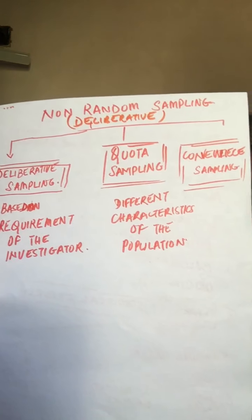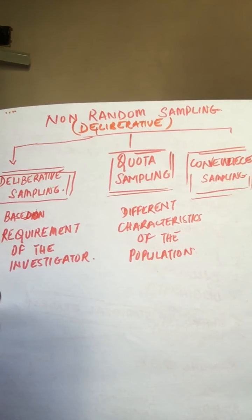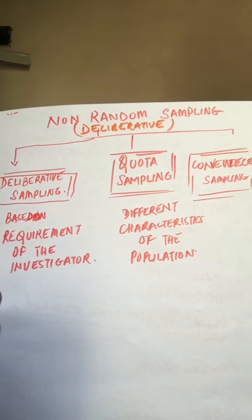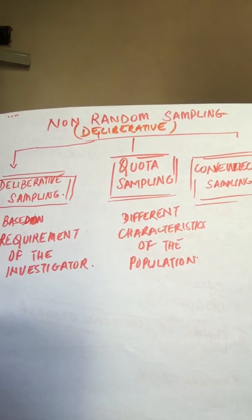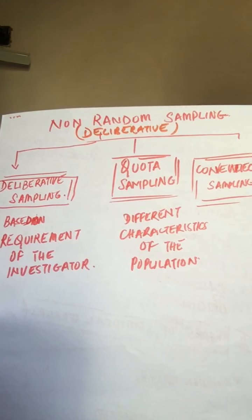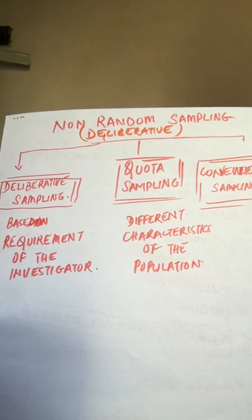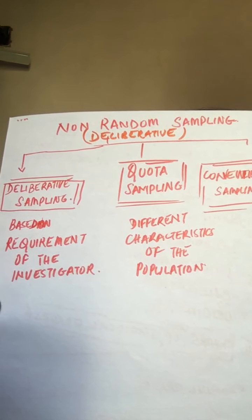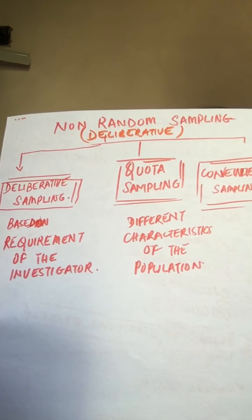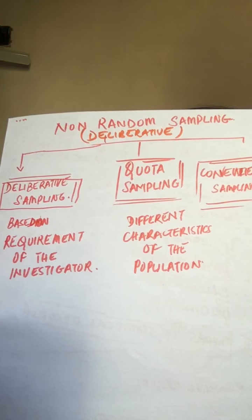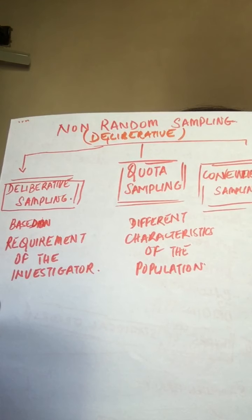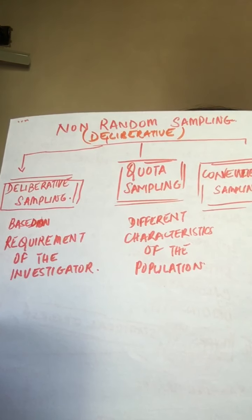Let's take the second one, quota sampling. Under this method, the population is divided into different groups or classes according to different characteristics. Some percentage of different groups of total population is fixed.